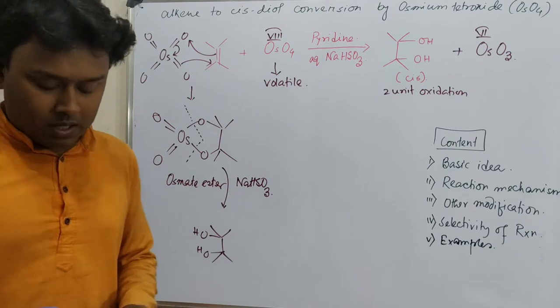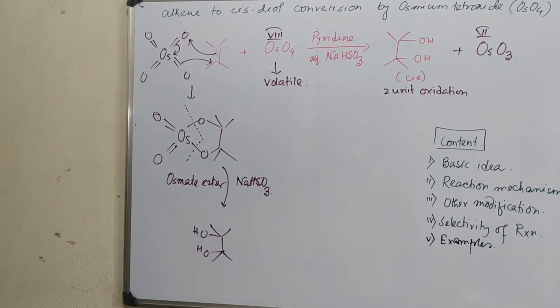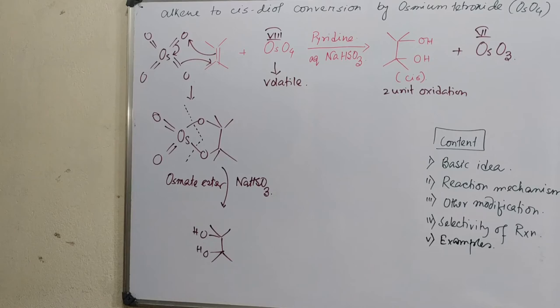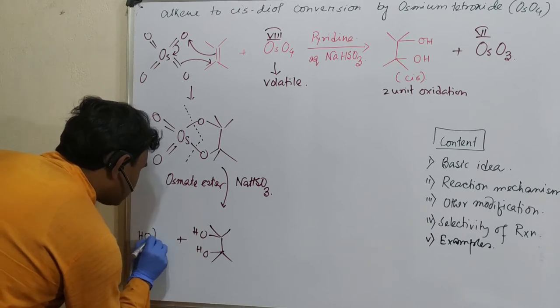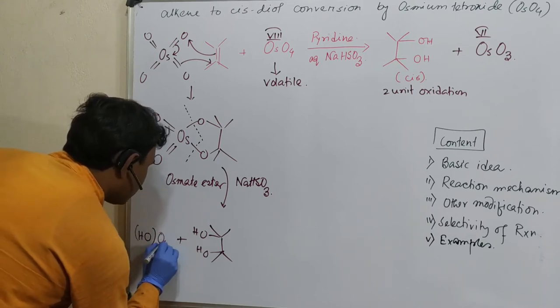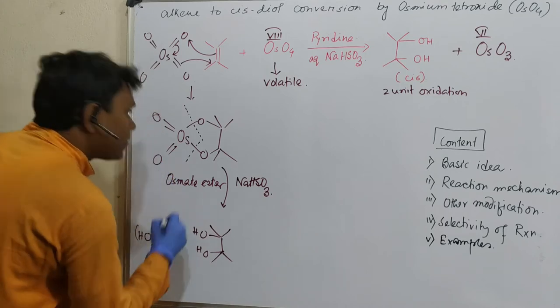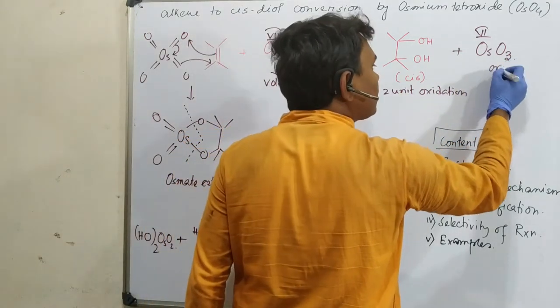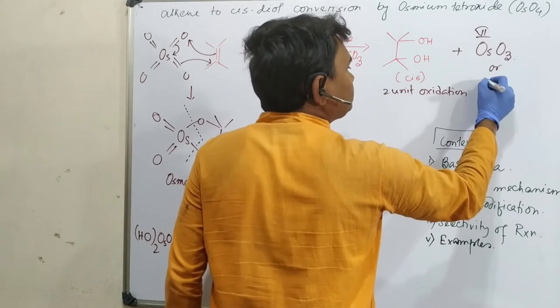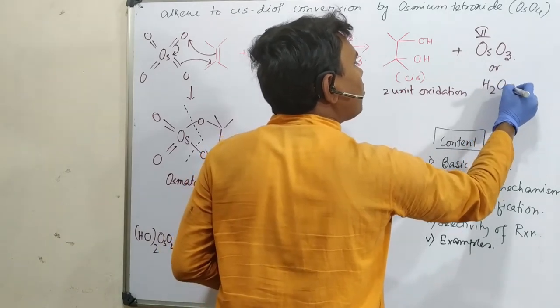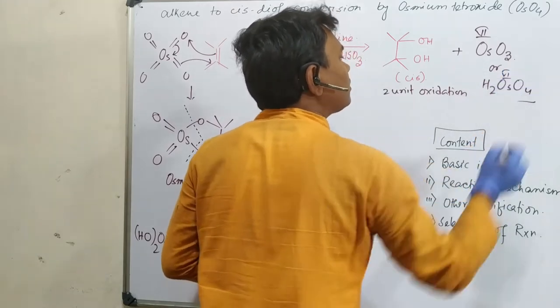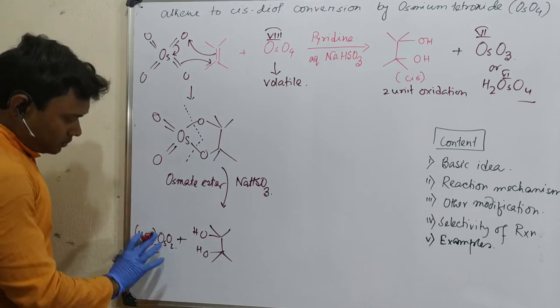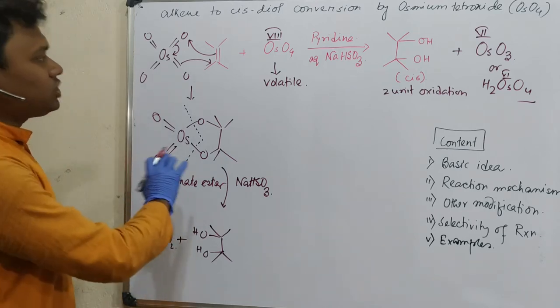In this case what happens? Actually this osmium is converted into osmium-6. You may write this as OsO3 or you may write this as twice OsO2. Means better to write H2OsO4. This is also +6 oxidation state. So this is perfect. So this is the overall mechanism.